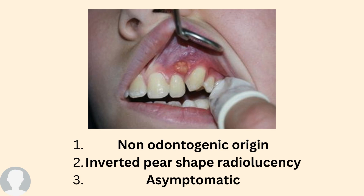The patient will not complain of any pain — they will tell you just about a swelling inside their mouth. As you can see in the picture, the patient came to us because of a large swelling, but not complaining of any pain. The associated teeth are non-carious. Upon examination, we discovered the patient has a globulomaxillary cyst located between the lateral incisor and canine region.